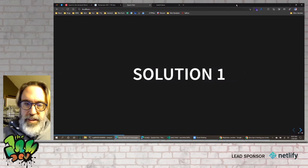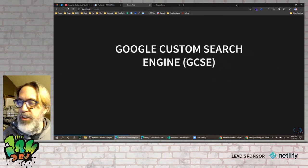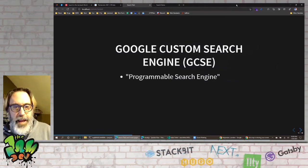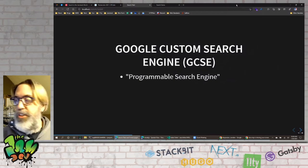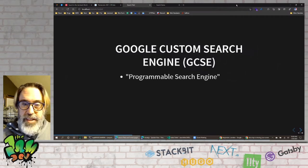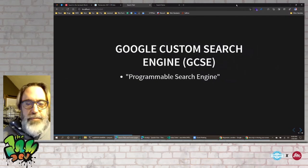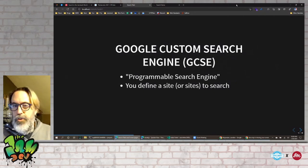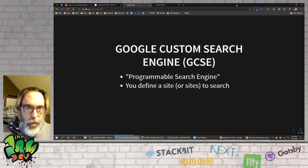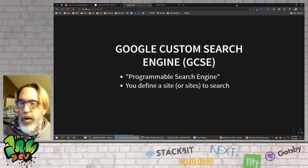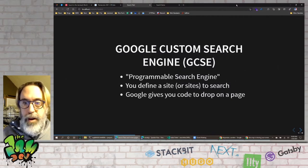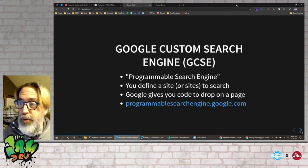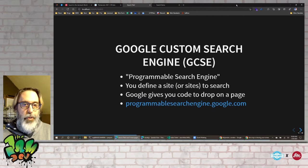The first solution is the Google Custom Search Engine — though I recently learned they changed their name to Programmable Search Engine, which I think is a dumb name. Custom Search Engine really described what it is. Basically, you define what you want to search (typically your website), and Google gives you code that you drop on a page. The marketing home is programmable search engine.google.com.